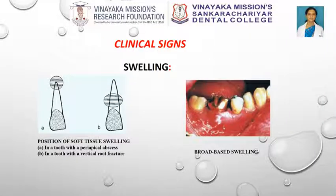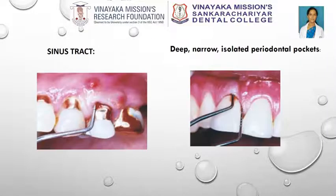Clinical signs include sinus tracts and swelling. The swelling is usually broad-based and mid-root in position. Palpation will often show swelling and tenderness over the root itself but little swelling in the periapical region. When a sinus tract is present, it may be situated in or close to attached gingiva rather than in an apical region. Double or multiple sinus tracts are also common.